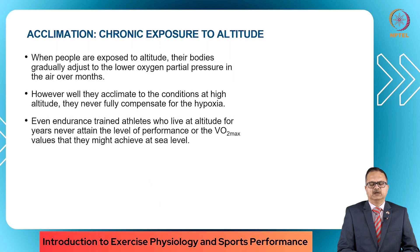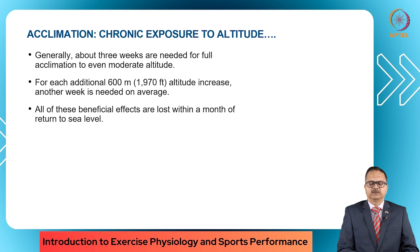When people are exposed to altitude, their bodies gradually adjust to the lower oxygen partial pressure over months. However well they acclimate, they never fully compensate for the hypoxia. Even endurance trained athletes who live at altitude for years never attain the level of performance or VO2 max values they may achieve at sea level. Generally, about three weeks are needed for full acclimation to even moderate altitude; for each additional 600 meters of altitude increase, another week is needed. But all beneficial effects are lost within a month of return to sea level.